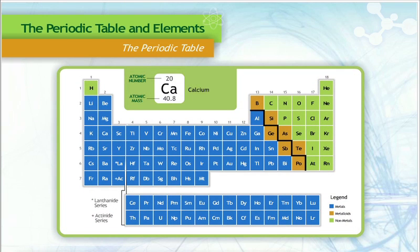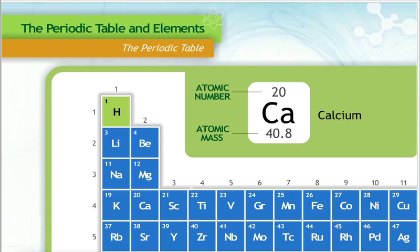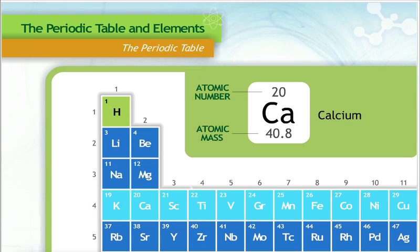The Periodic Table is an arrangement of chemical elements ordered by atomic number. It was designed by Dmitry Mendeleev as a way of presenting all the elements to show their similarities and differences. Every element is listed on the Periodic Table and is contained in its own box. The elements are arranged in increasing order of atomic number as you go from left to right across the table. The horizontal rows are called Periods.